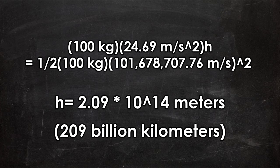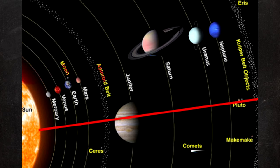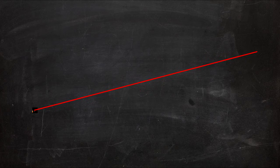This means that if he used all of his strength, he could jump 209 billion kilometers high. If Steve jumped from Earth with this much power, he would shoot right past Pluto and still have 203 billion kilometers to go. He'd be well on his way to the next star.